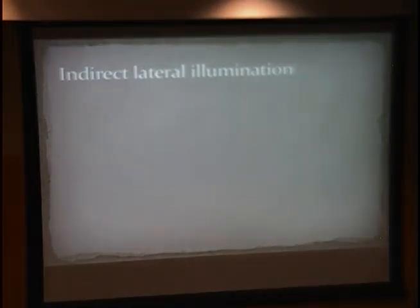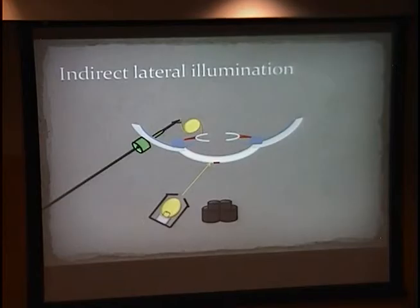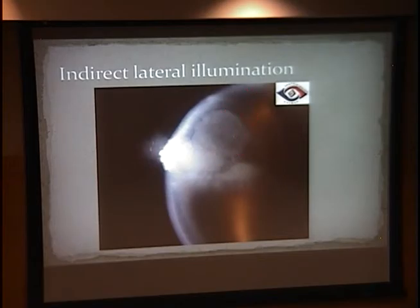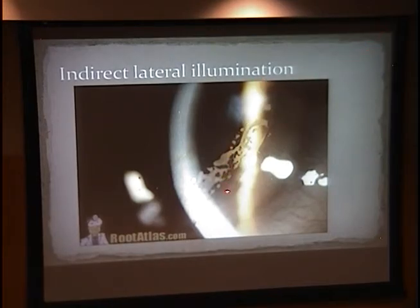The next technique is indirect lateral illumination. They found our IOL. We're going to take a light source and shine it just laterally to our lesion, and what that's going to do is light up the entire lesion for us. You see retro-illumination here, direct illumination here, but this whole area is lit up — that's indirect lateral illumination. This is another example of pseudomonas keratitis. Here's another good example: an epithelial ingrowth underneath a LASIK flap, showing retro-illumination, indirect illumination, and direct focal illumination.